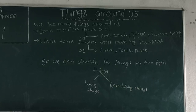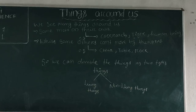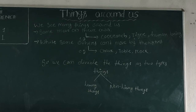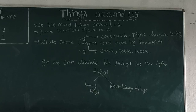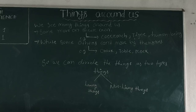Living things can do many things that non-living things cannot. Living things need food to grow — food provides energy to them. Some animals like goats, rabbits, and cows eat plants. Tigers, lions, and jackals eat other animals. But human beings and animals like bears and squirrels eat both plants and animals.